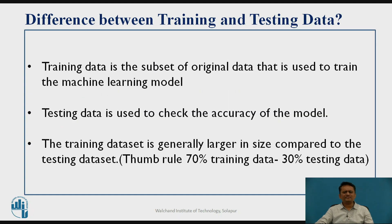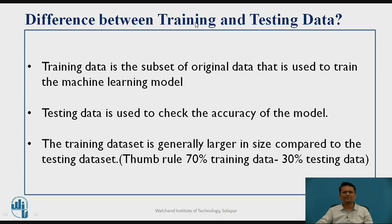What is exactly the difference between the training dataset and testing dataset? When you are developing a machine learning model, you get data based on the objective, you choose the data, you do pre-processing, and then the total dataset, when using supervised learning, is divided into two parts — some part for training and the remaining part for testing.